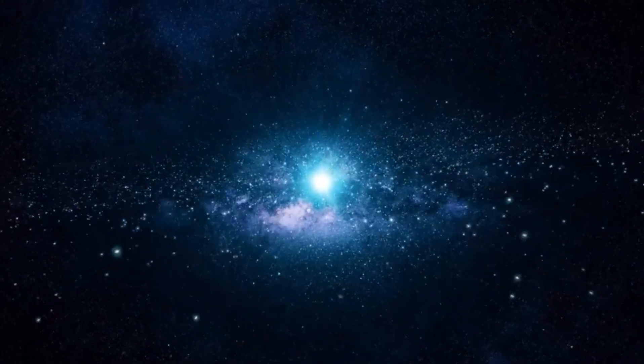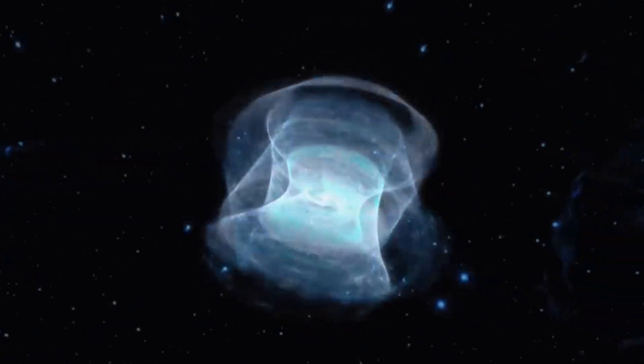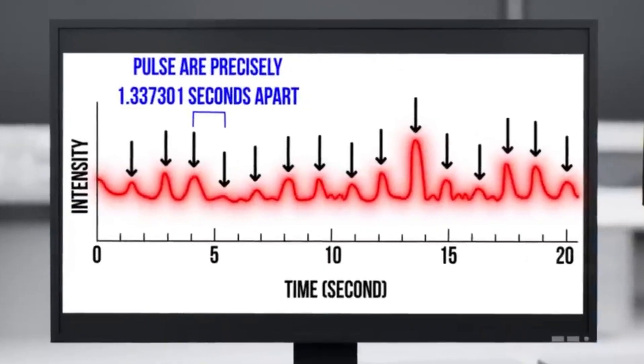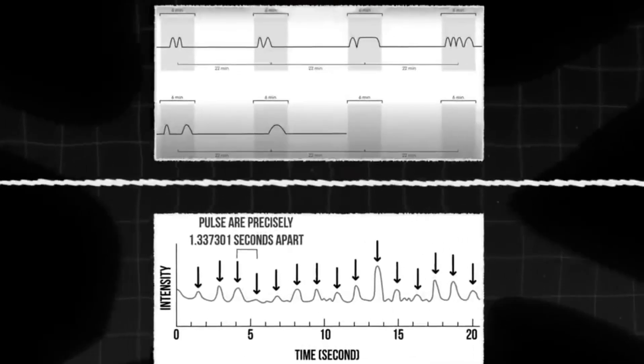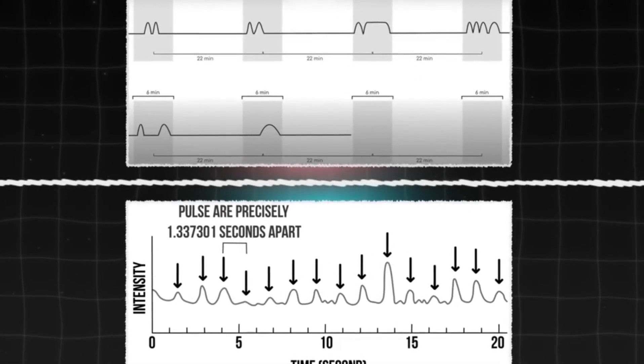So the pulsars are like great lighthouses, sweeping their beams of light around the cosmos as they spin. And for an observer far away, like us on planet Earth, we see the beams sweep past us again and again, as the pulsar completes rotations on its axis. These are the pulses of light that our telescopes can detect.